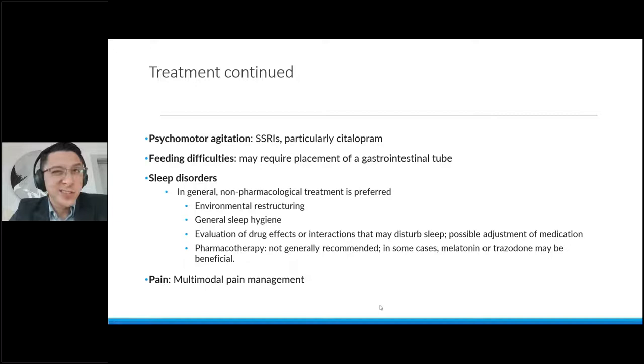Sleep disorders in general, and this is not just for patients with Alzheimer's disease, but for everyone. Non-pharmacological treatments are preferred. Environmental restructuring, general sleep hygiene, medication reconciliation, to make sure you don't have a medication that's activating, that's being given at the wrong time of the day, that's causing the patient to not be able to sleep. If you have to use pharmacotherapy, we try to use melatonin or trazodone. However, very low doses. Melatonin, it is not a hypnotic. It's hailed mostly as a chronobiotic, which means it protects and fosters circadian rhythm stability. So low doses of melatonin tend to be a little more chronobiotic than higher doses.